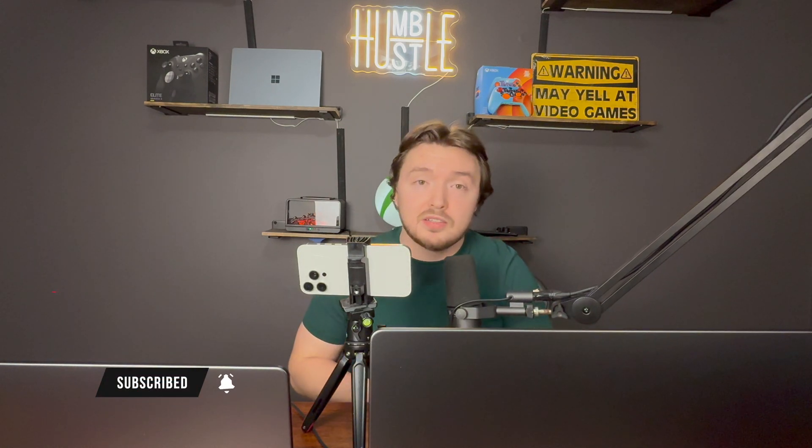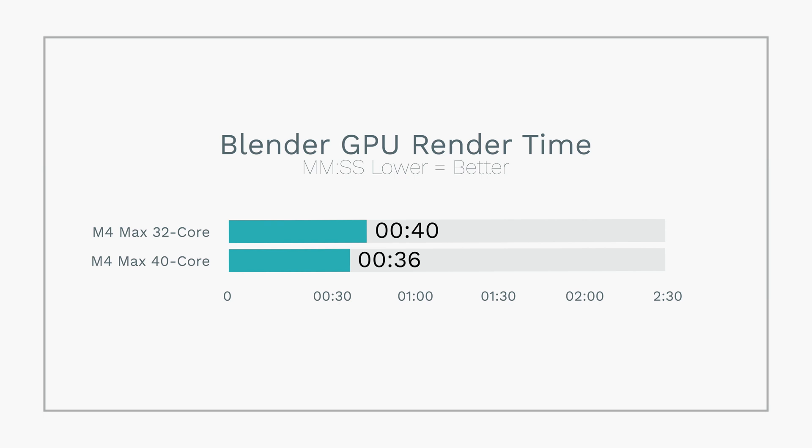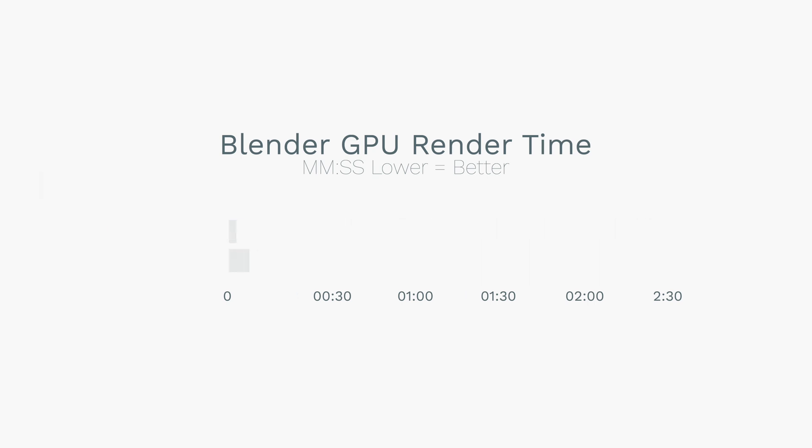For our Blender BMW scene CPU render: the 14-core finished in 1 minute 37 seconds and the 16-core finished in 1 minute 21 seconds. On the GPU render, the 32-core took 40 seconds and the 40-core took 36 seconds. The gap is minimal on a short scene like this, but on a longer render the difference would likely be more significant.